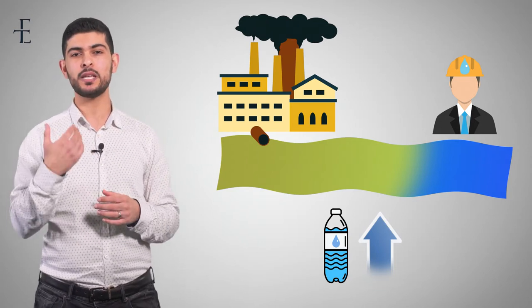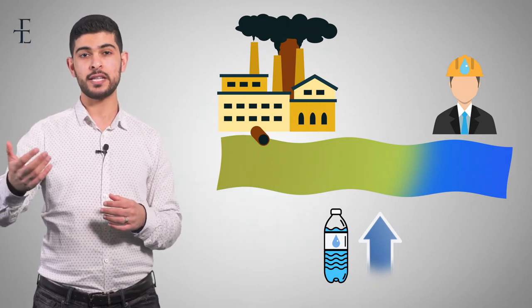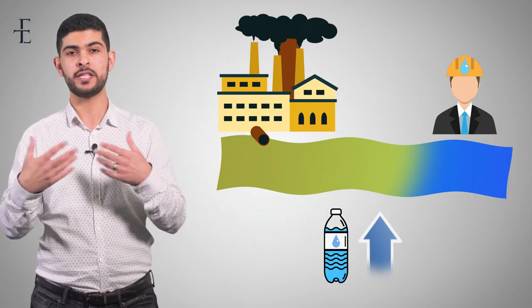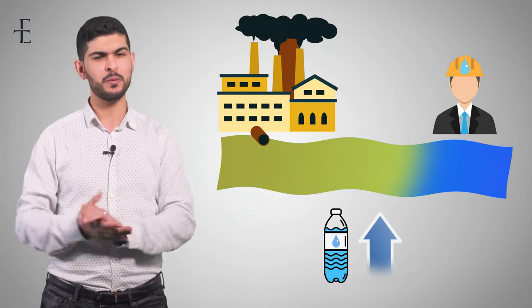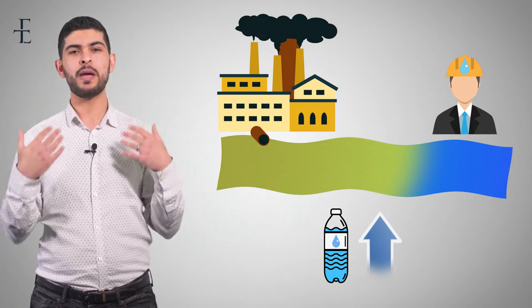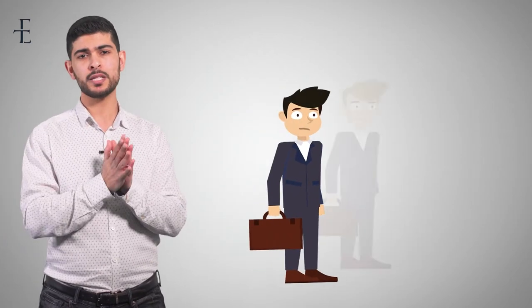An externality is where someone does something and it has a spillover effect on others that were not involved in the decision making. You and I didn't go up to the chemical company and say we'd like to pay more for our water — but we were impacted by their decision. Second example: you're walking down the street and you walk past someone that's smoking. What happens to you? Well, you passively smoke. That's pretty bad for you. Again, that individual's decision to smoke didn't just impact them — it impacted you and all the other people around them.